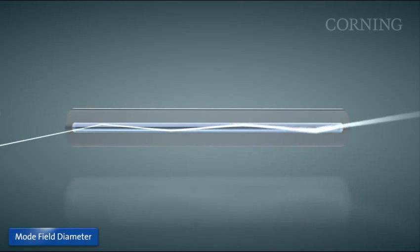In a single-mode fiber, some of the optical power is actually guided outside the core. In fact, as much as 30% of the light propagates in the cladding layer of some fibers. The mode field diameter defines the size of the optical power distribution in the fiber.